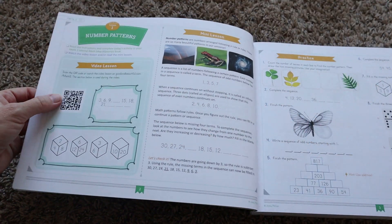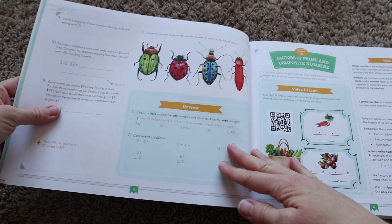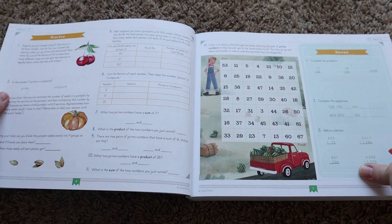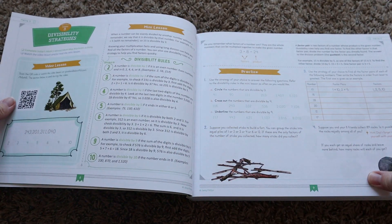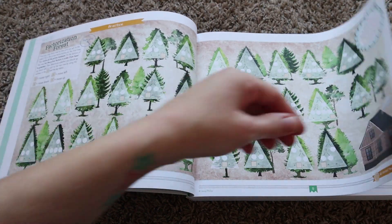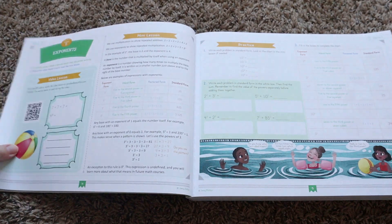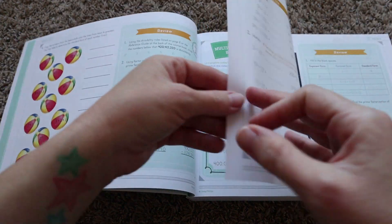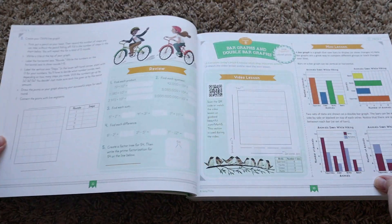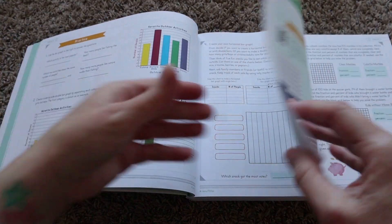Now, if you are planning on purchasing this for the entire set, that includes the course book, the mental math book and the answer key. It is $58.97. If you are only needing like one or two of those items and you're planning on purchasing separately, the course book is $34.99. The mental math book is $11.99 and then the answer key is $11.99 as well.